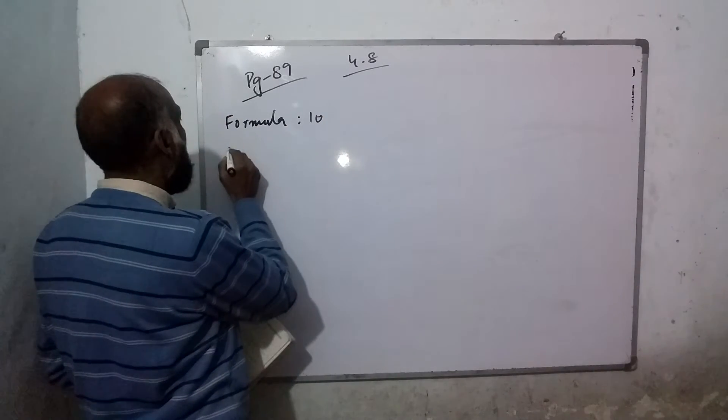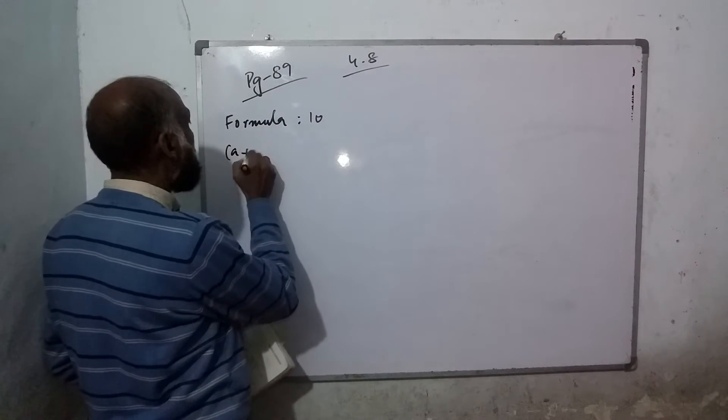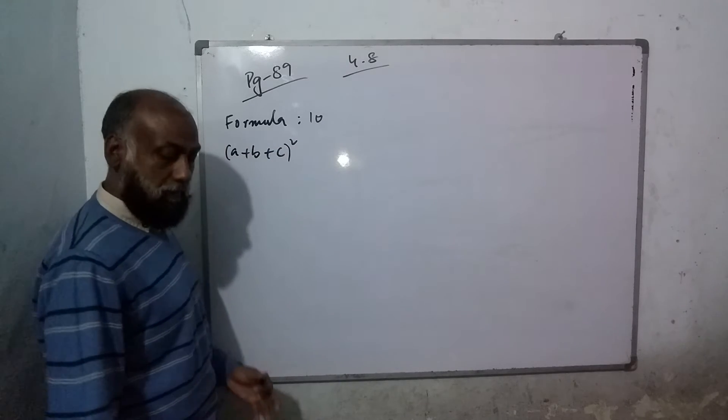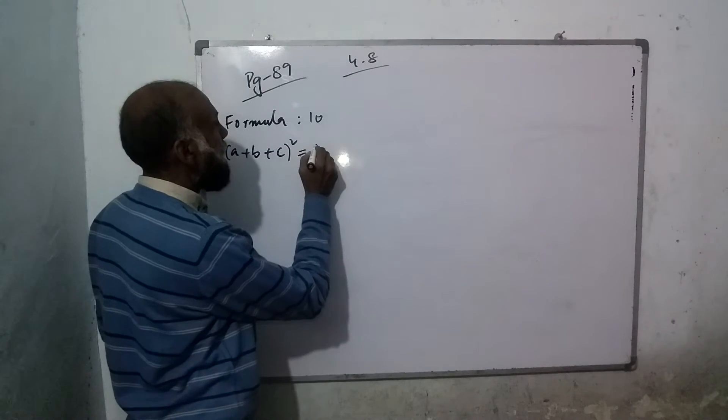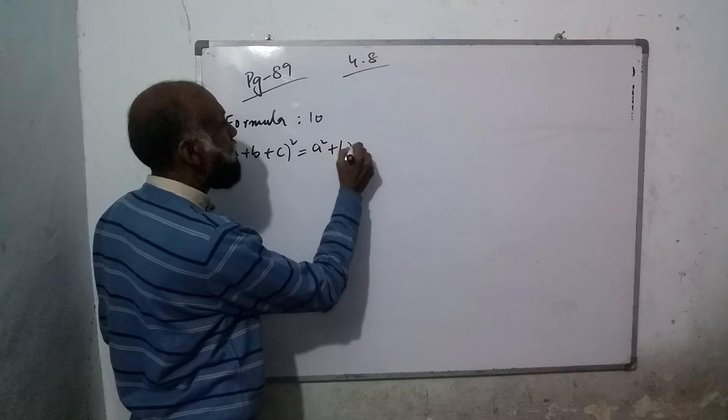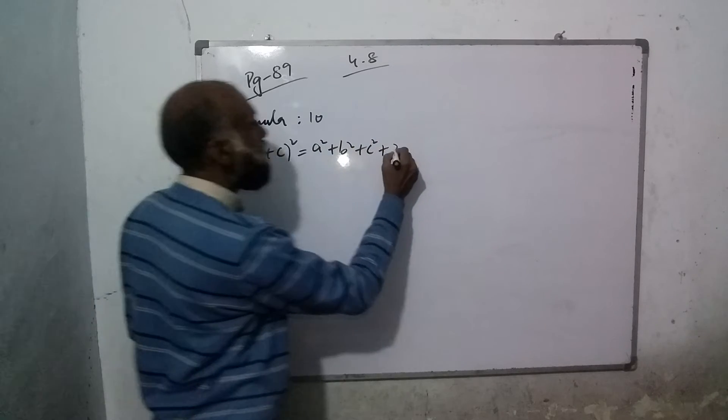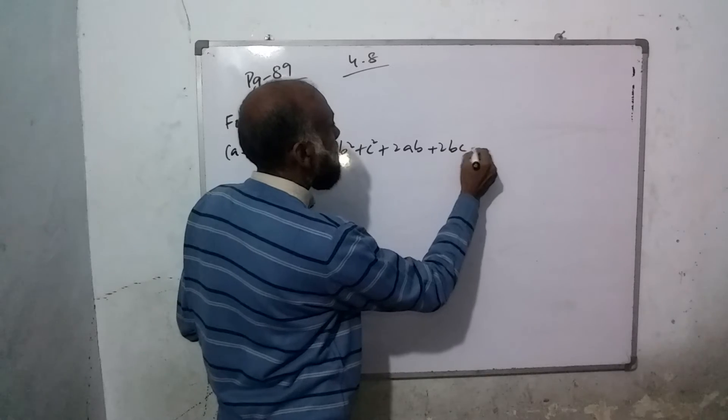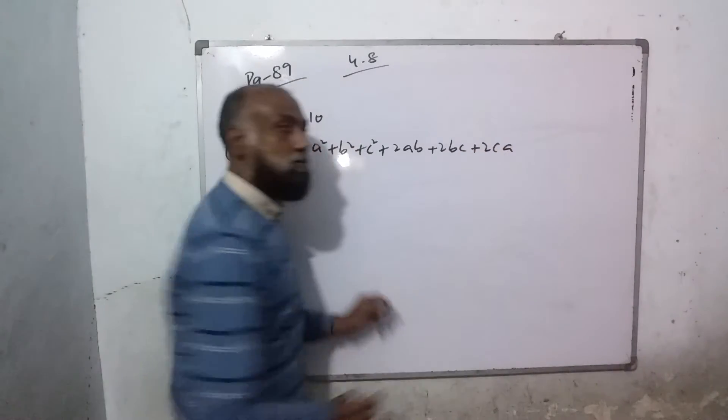The formula is (a+b+c) whole square, which equals a² + b² + c² + 2ab + 2bc + 2ca. This is the formula.